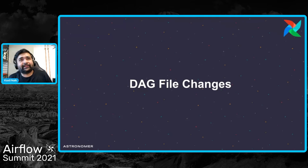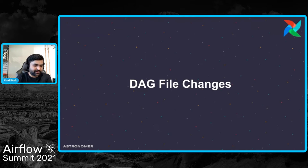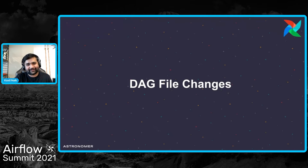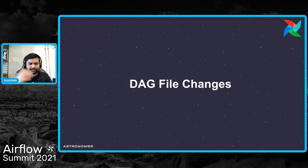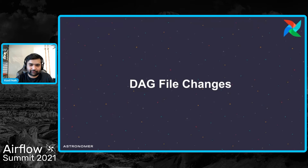There are four areas of changes: configurations, DAG files, plugins, and the metadata database. Let's go across each of them — that's also what the upgrade check command will show you. Let's start with DAG file changes.